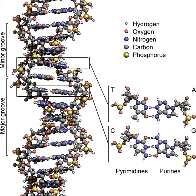There are also three stop or nonsense codons signifying the end of the coding region. These are the TAA, TGA, and TAG codons.